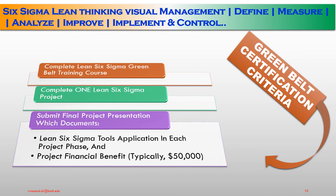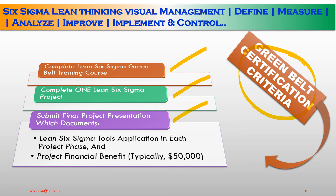Green Belt certification criteria: the candidate must complete a Lean Six Sigma Green Belt training course, complete one Lean Six Sigma project, and submit a final project presentation that documents the benefits, Lean Six Sigma tools application in each project phase, and project financial benefits — typically ranging from forty thousand to sixty thousand dollars achieved.